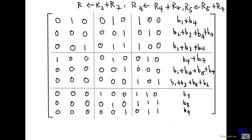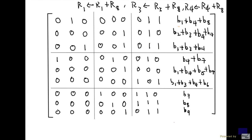Next, replace row 1 with row 1 plus row 8, row 3 with row 3 plus row 8, and row 4 with row 4 plus row 8, clearing out the 1s. Row 8 added to row 1 gives 0, 0, 1, 1, with b8 added to the right. Row 8 added to row 3 gives 0, 0, 1, 1, with b8 added. Row 8 added to row 4 gives 0, 1, 0, 1, with b8 added to the right.